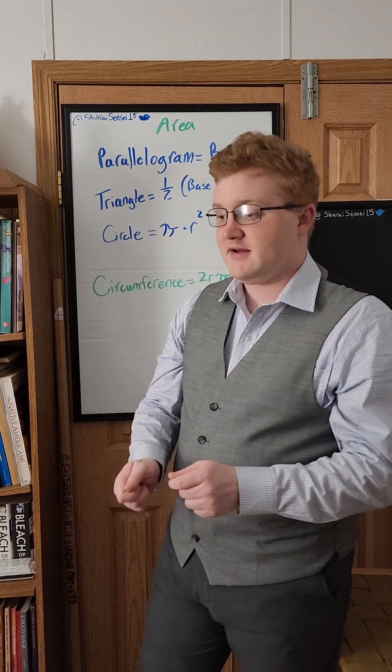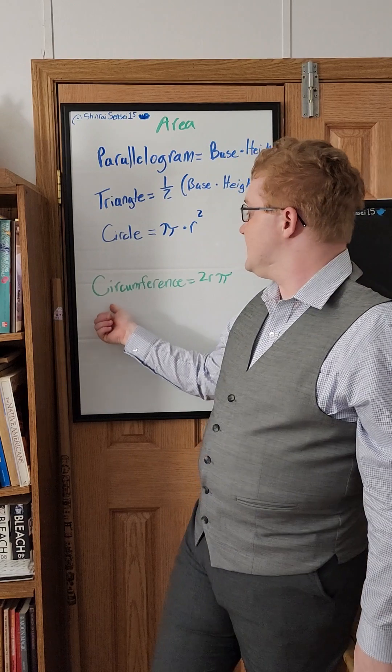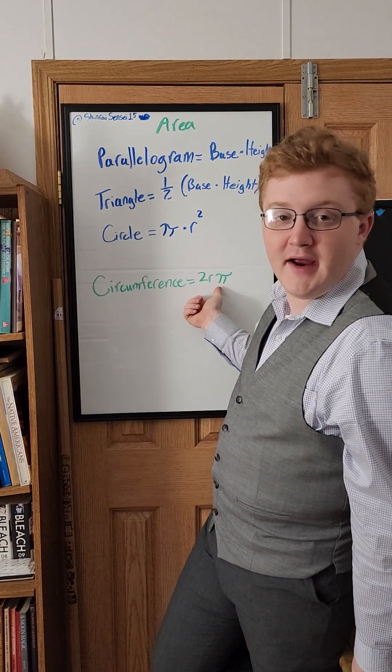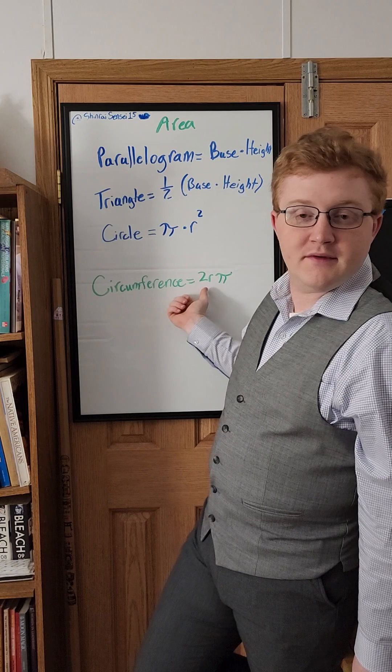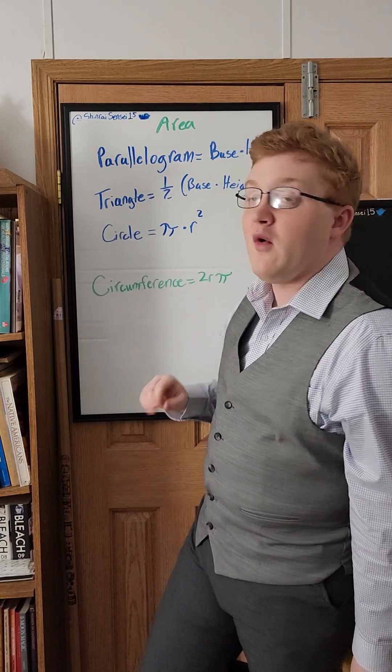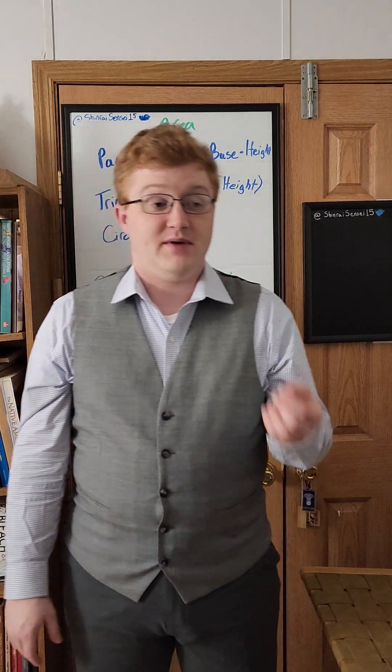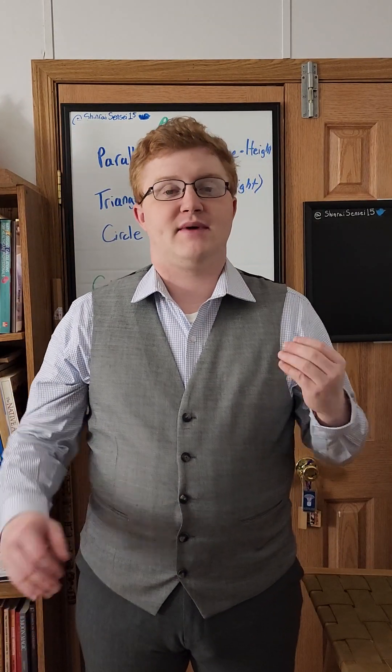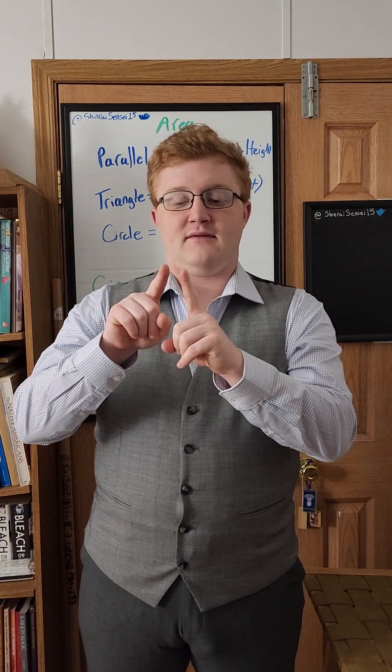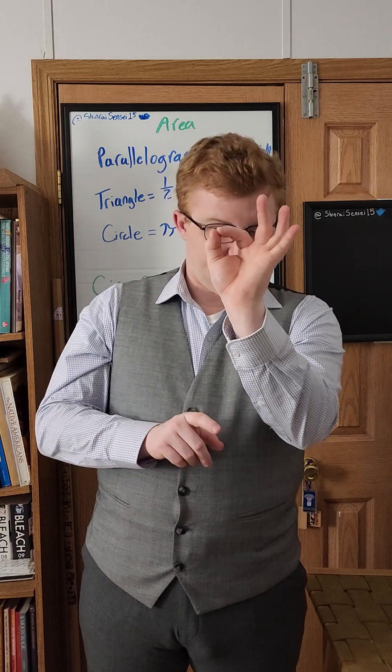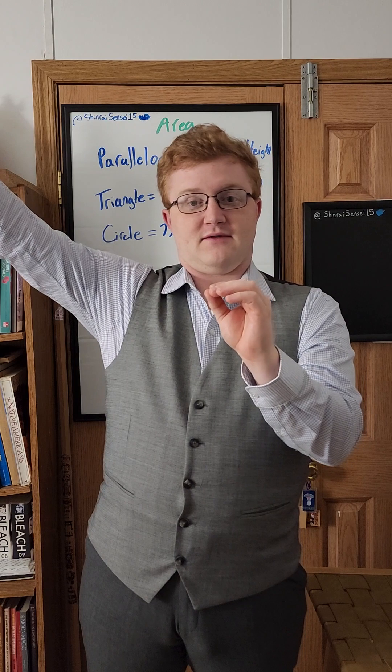But a circle's circumference is two times the radius times pi, or diameter times pi, because two times the radius—the radius is the distance from the very center of the circle to the outermost edge of the circle.